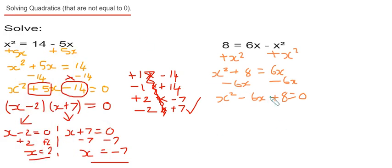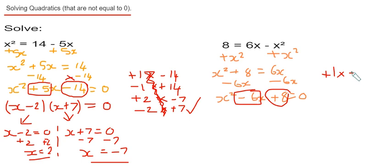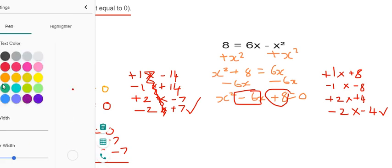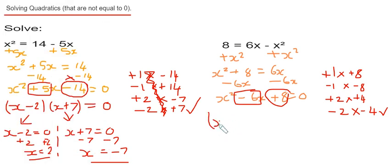We look for numbers which multiply to give us plus 8 and add to give us minus 6, so we can put it into a double bracket. Numbers that multiply to give plus 8 are: plus 1 times plus 8, negative 1 times negative 8, plus 2 times plus 4, and minus 2 times negative 4. The pair we need is minus 2 and minus 4, because minus 2 take away 4 gives minus 6. Let's put this into our brackets.